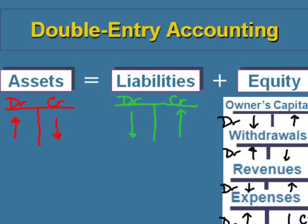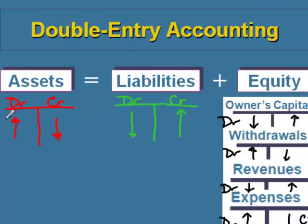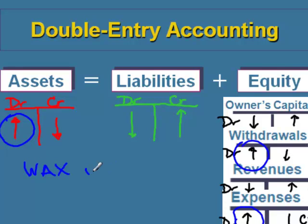Now, these rules seem quite confusing. So we're going to use a little acronym to help keep the rules straight. We're going to look at the types of accounts that all go up with debits: assets, withdrawals, and expenses. The acronym we're going to use is WAX — we're going to WAX up debits. Withdrawals, assets, and expense accounts all go up with debits and down with credits.